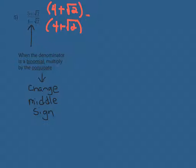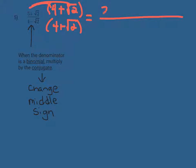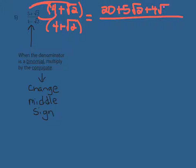Let's start with the numerator — we're going to have to double distribute. When I distribute the 5 to both terms it gives me 20 plus 5 radical 2. When I distribute the radical 2 to both terms, radical 2 times 4 is 4 radical 2, and radical 2 times radical 2 is just 2. You can write it as radical 4, but that simplifies to just 2.